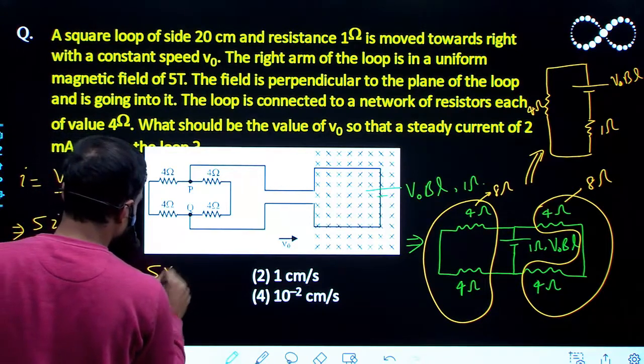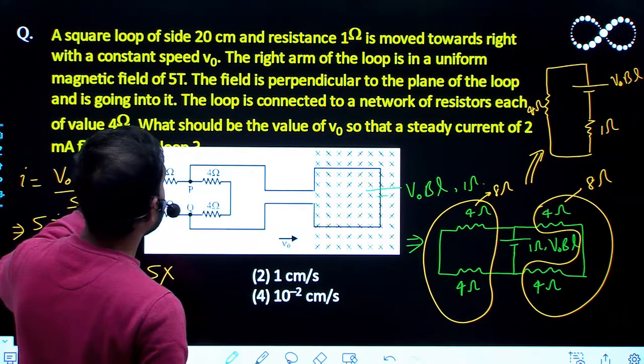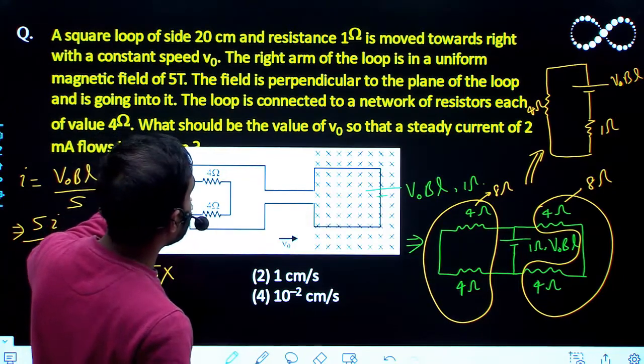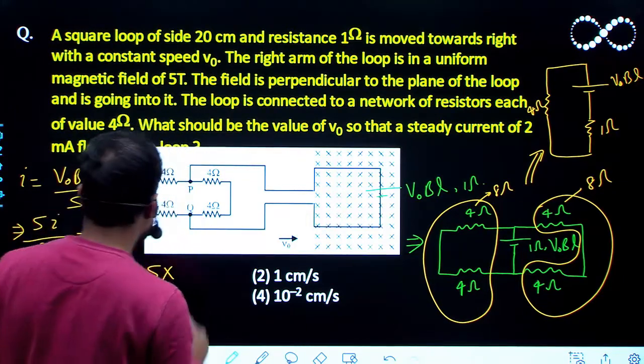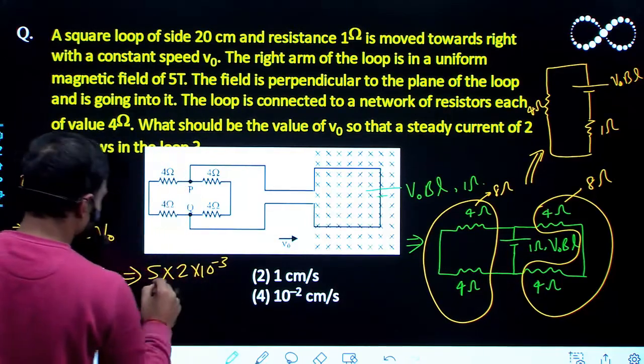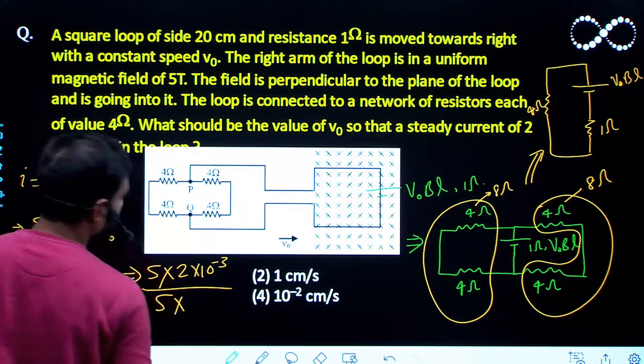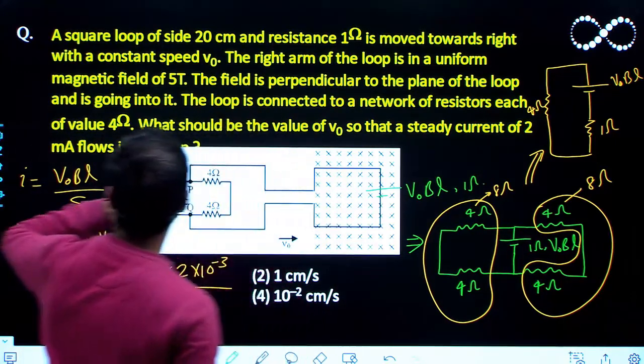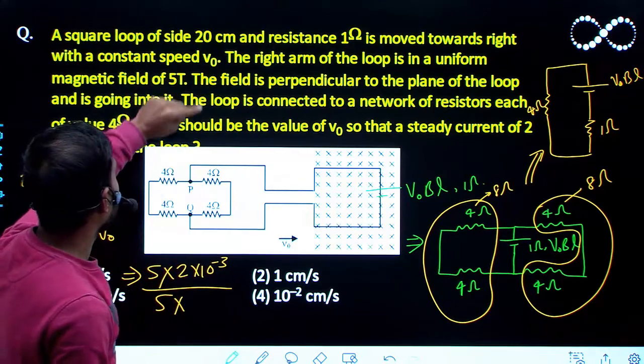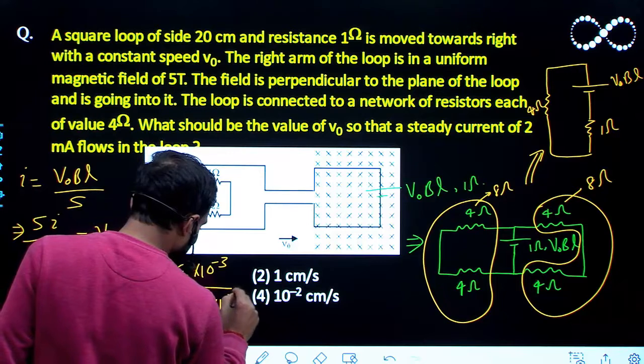5I, so 5 into the value of I is given in the equation that is a steady current of 2 mA, so 2 into 10 raised to the power minus 3. And the value of B is also given in the equation that is 5 tesla and the value of L that is the length of this. So a square loop is having side of 20 centimeter, so 20 into 10 raised to the power minus 2.